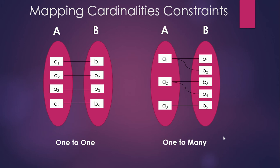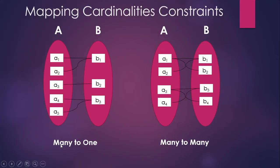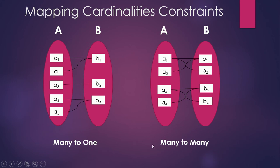We have seen one-to-one and one-to-many. Now for many-to-one: set A has entities and set B has fewer entities. Multiple entities from A — for example A3, A4, A5 — are related to one entity in B, such as B3. This is many-to-one. For many-to-many, entities in A can connect to any number of entities in B, and entities in B can connect to any number of entities in A.